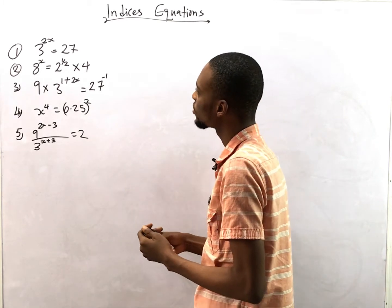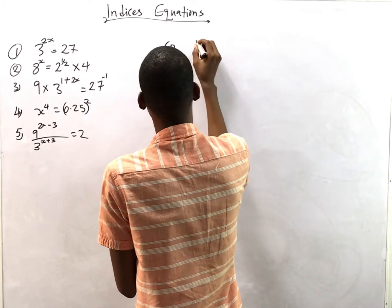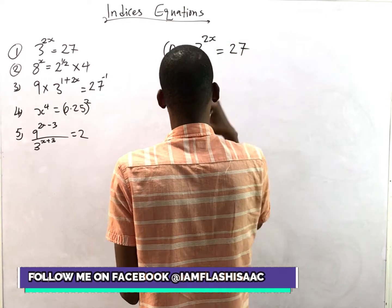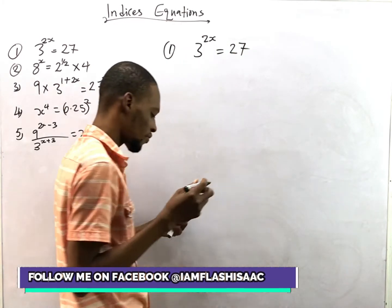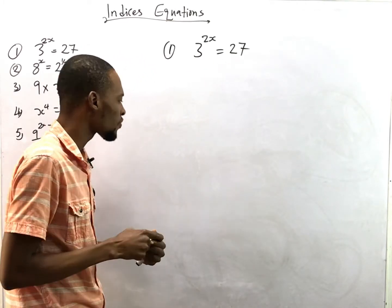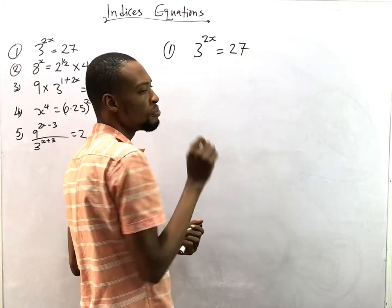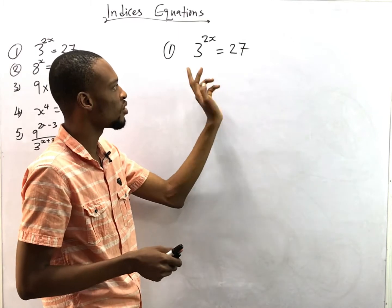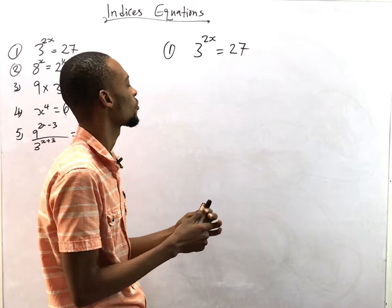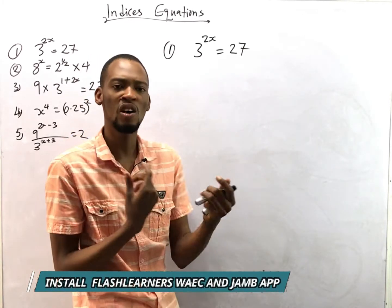The first question says: 3^(2s) = 27. So we have 3 on the left and 27 on the right. To solve this, we look for how to get a common base, because once the bases are common you can equate the powers — that's the law of indices. So how many times does 3 multiply to give 27?